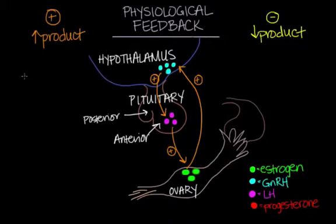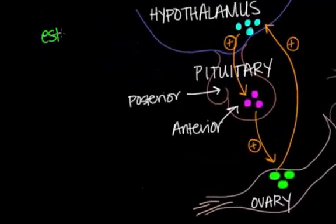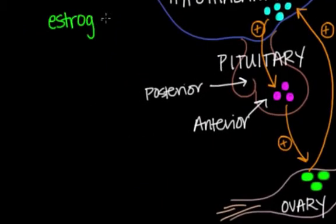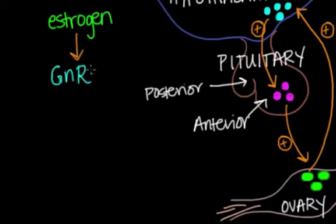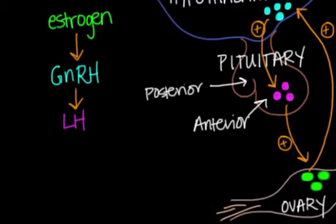So estrogen is produced, which triggers GnRH, and that works to trigger LH. GnRH and LH are going to be accumulating in our blood due to positive feedback.